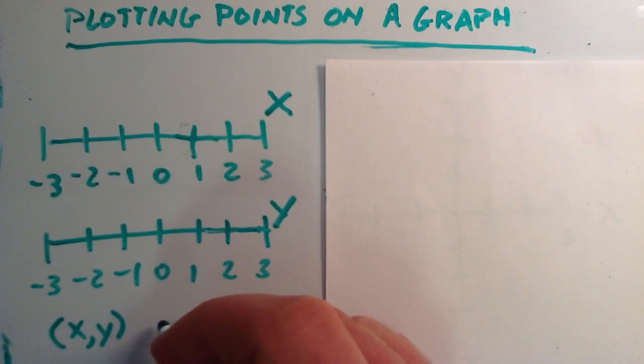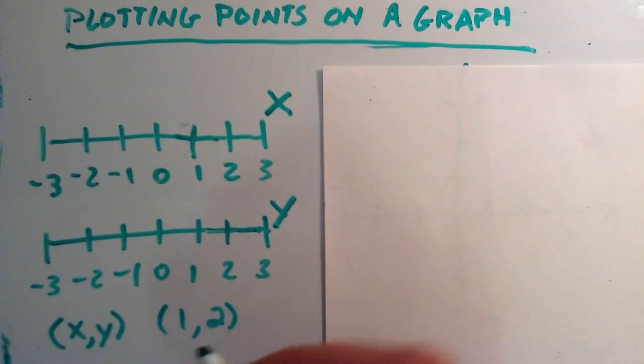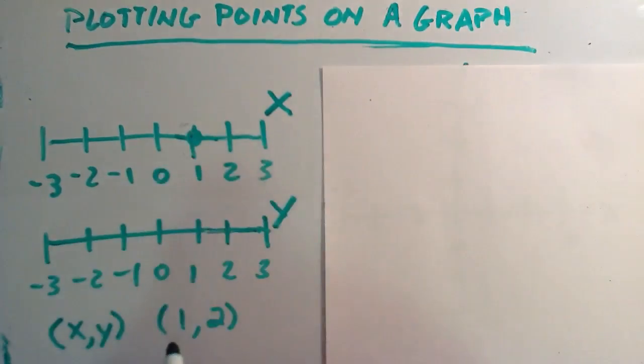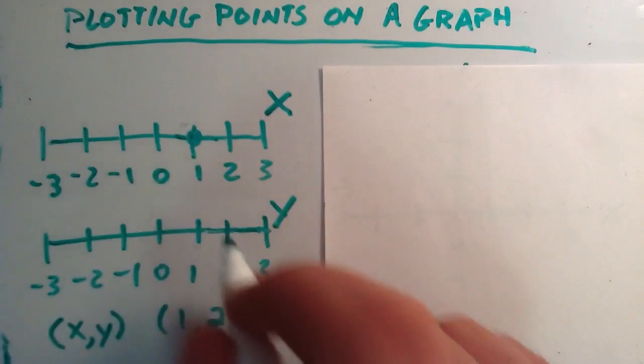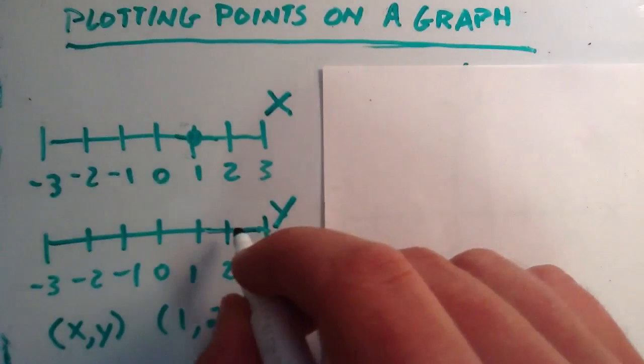So for instance, the point (1, 2) represents a point that falls here on the x, because the first number is 1, so it represents 1 on the x, and 2 on the y, because 2 is the second number. Y is the second part of the ordered pair.